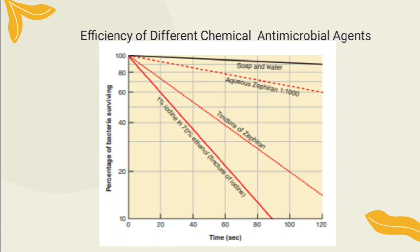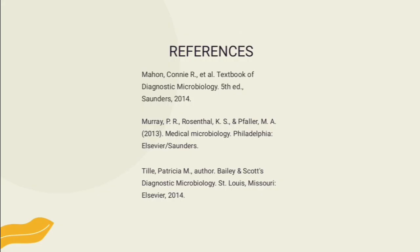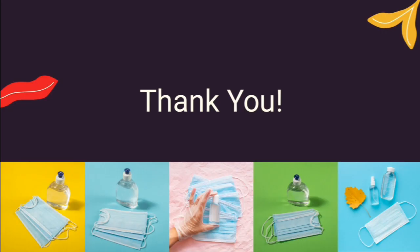This chart shows the efficiency of different chemical antimicrobial agents — a comparison of the effectiveness of various antiseptics. The steeper the downward slope of the killing curve, the more effective the antiseptic. Therefore, a 1% iodine in a 70% ethanol solution is the most effective, and soap and water are the least effective. A tincture of Zephyran is more effective than an aqueous solution of the same antiseptic. These are the references used for this lesson. Thank you so much for listening — I hope you learned something. You can replay the video if needed. Have a good day and God bless.